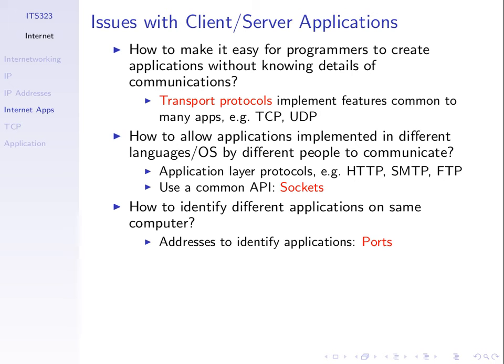Another very important issue is that many computers on the internet may run more than one application at the same time — you run an instant messaging client, a web browser, an email client, and a server can be running multiple pieces of software simultaneously. So we need some way to identify different applications on the same computer. We'll introduce what are called ports, or port numbers, which do that for us. Let's briefly talk about transport protocols and ports and some of the numbering used.